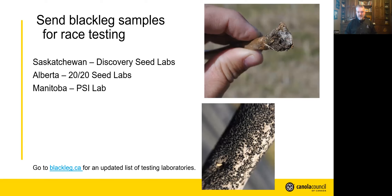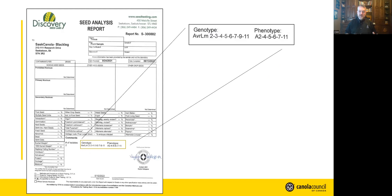If you want to get the Leptosphaeria maculans races identified for a field that you had blackleg issues in, and you want to select a better canola cultivar the next time you plant canola in that field, you need to take a sample of an infected stem. That can be this year's canola or old canola residue from a couple of years ago. Look for evidence of the disease — you need to have the pathogen present on those samples. Send it to one of these three labs: Discovery Seeds in Saskatchewan, 2020 Seeds in Alberta, or PSI Lab in Manitoba. You'll get some results from the labs, and they might look something like this example from Discovery Seed Labs.